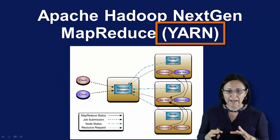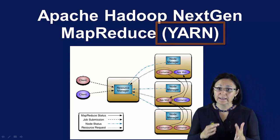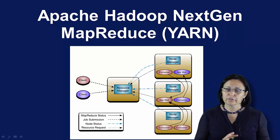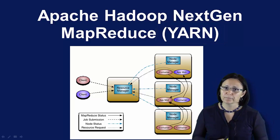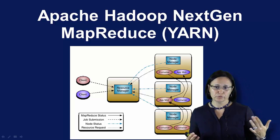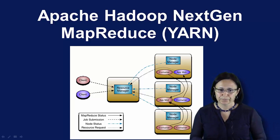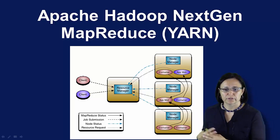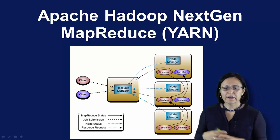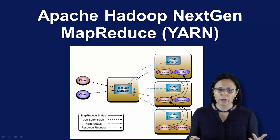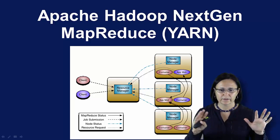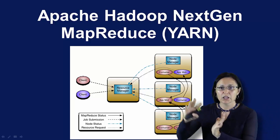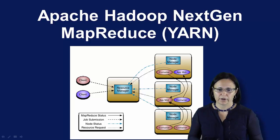Apache Hadoop YARN is actually another subset of Hadoop and part of the Apache Software Foundation. It was introduced as Hadoop 2.0 and basically separates the resource management and the processing components. YARN was born as a need to enable a broader array of interaction patterns for data stored in HDFS beyond the MapReduce kind of framework.